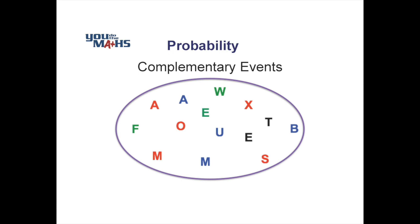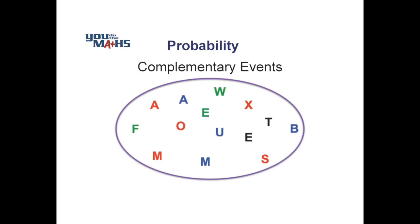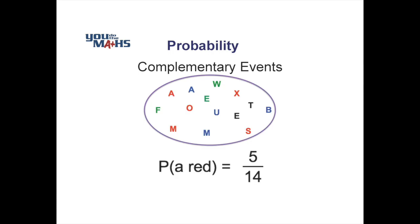The first probability we're going to look at is the probability of a vowel. We go through and identify all the possible outcomes — there are 14 of them — and six of those letters are vowels, so they are the favorable outcomes. The probability of a vowel is 6 over 14. Now let's look at the probability of a red letter. The total number of outcomes is still 14, and there are five red letters, so the probability of a red is 5 over 14.